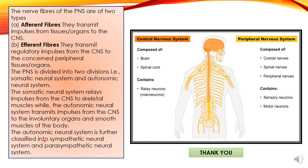The autonomic neural system is further classified into the sympathetic neural system and the parasympathetic neural system, and they work in an antagonistic way. When the body is in a stressful condition and gets excited, the sympathetic nervous system increases heartbeat and the rate of breathing. When the body has to cool down, that is brought about by the parasympathetic neural system. None of these autonomic systems are under our voluntary control — they function on their own.